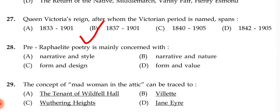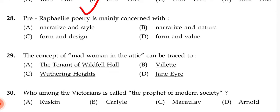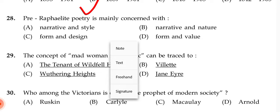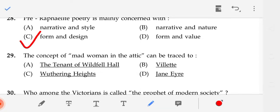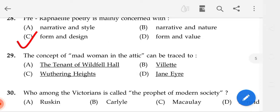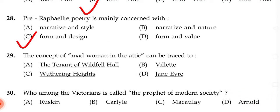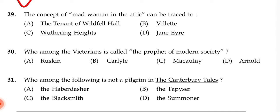Pre-Raphaelite poetry is mainly concerned with — the correct answer is C — form and design.